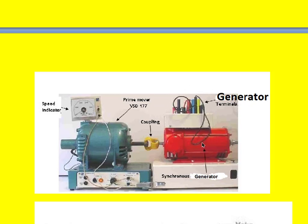The input to this generator is mechanical input, which comes from the motor. The motor takes electrical energy and gives mechanical output. It has electrical input that is converted into mechanical power, and that mechanical power is fed to the rotor of the synchronous generator through the coupler.